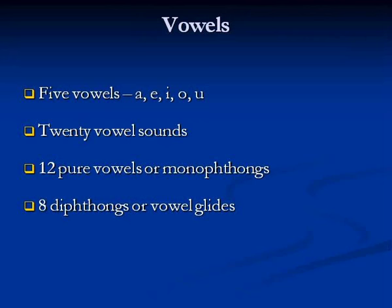Which are the vowels in English? A, E, I, O, U — five vowels, whereas we have 20 vowel sounds. Out of the 20 vowel sounds, 12 are pure vowels or monophthongs and 8 are diphthongs or vowel glides. Let us see what are monophthongs and diphthongs.